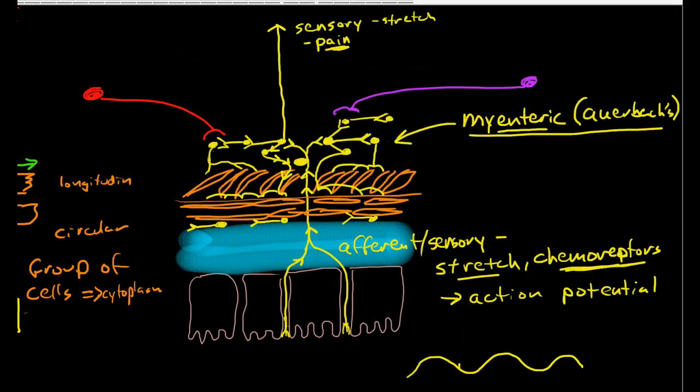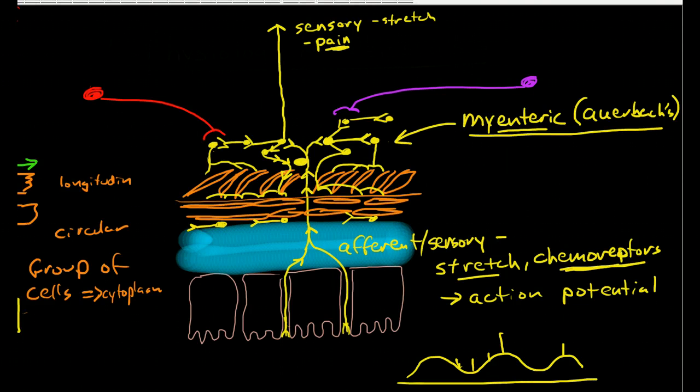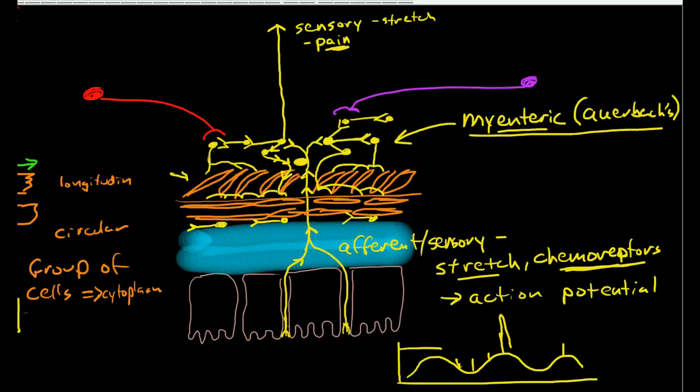If the spike wave is powerful enough or occurs at the right time of the slow undulating wave pattern to reach action potential, then it's going to cause a true action potential to occur and cause the muscle to contract.